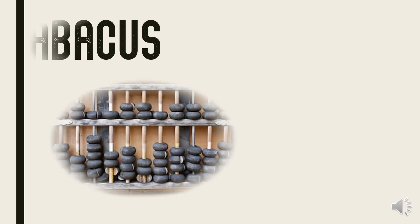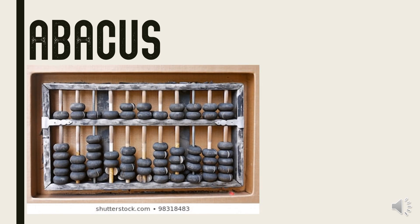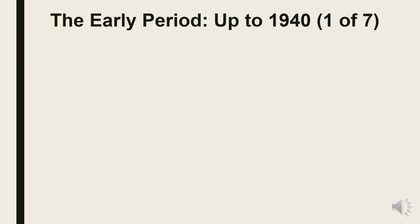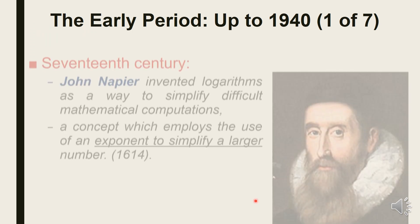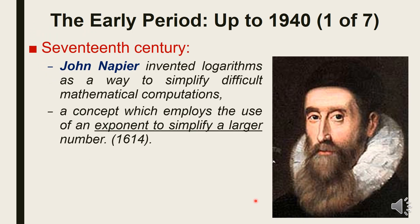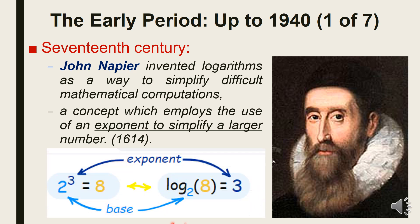Early computers were only conceived as calculating devices. Since ancient times, simple manual devices like the Abacus aided people in doing calculations. On the 17th century, a famous Scottish mathematician John Napier invented logarithms as a way to simplify difficult mathematical computations.